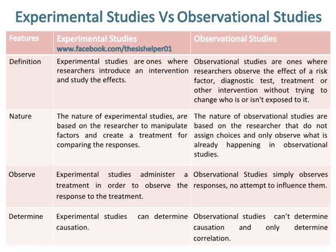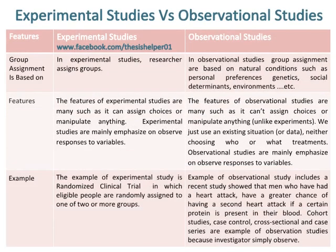Experimental studies can determine causation, while observational studies cannot determine causation and only determine correlation. In experimental studies, the researcher assigns groups, while in observational studies, group assignment is based on natural conditions such as personal preferences, genetics, social determinants, and environments.